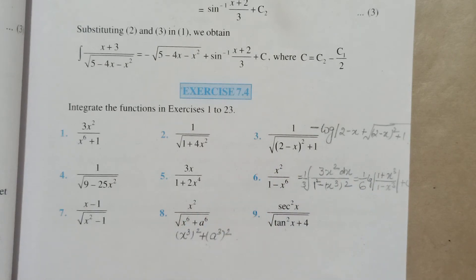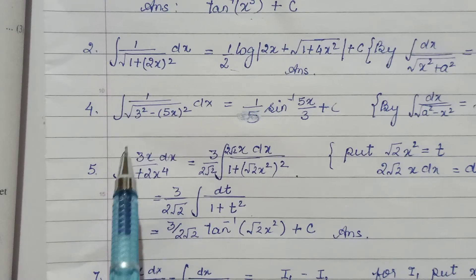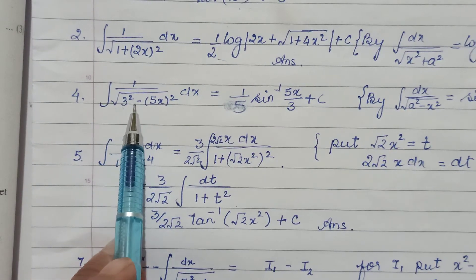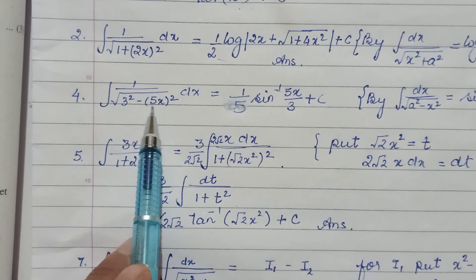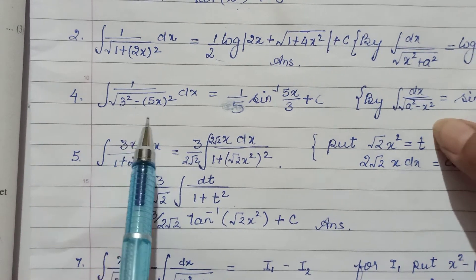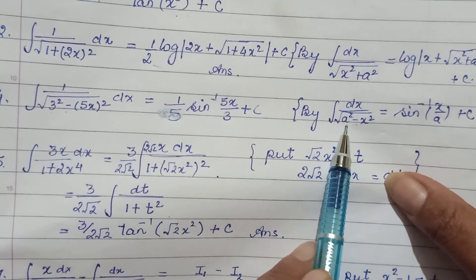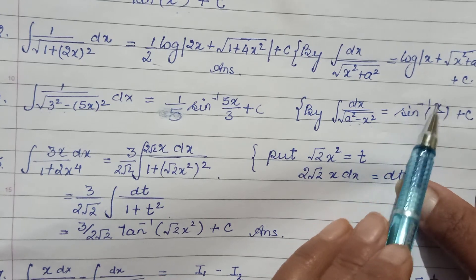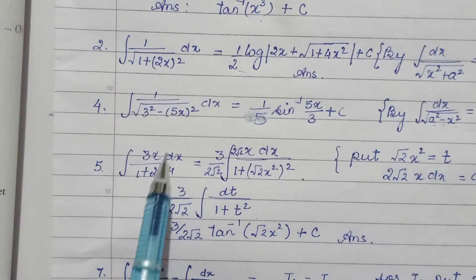For the 4th one, √9 can be written as 3², and 25x² as (5x)². Why have we done that? To match with the result √(a² - x²) dx, which is sin⁻¹(x/a).